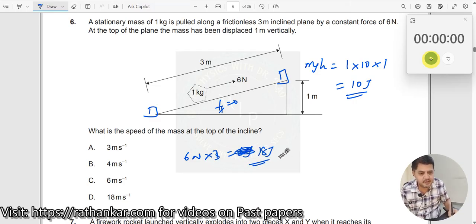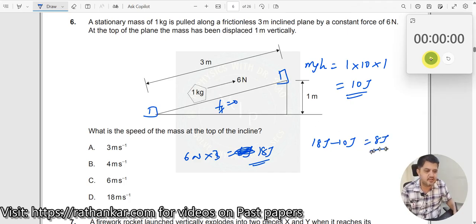So how much extra you are applying? You are applying an extra energy of 18 joules minus 10 joules, because 10 joules you need to apply whatever it is. But still you are applying more energy which means 8 joules extra you are applying.